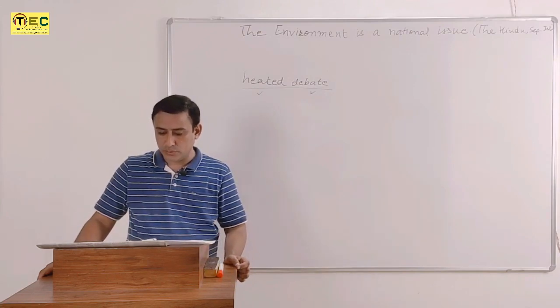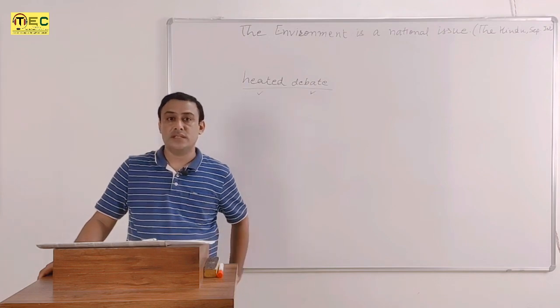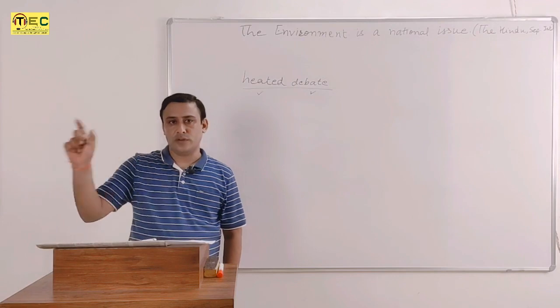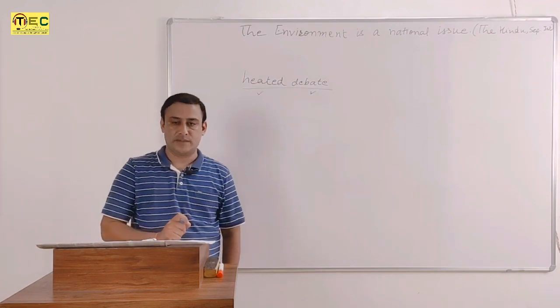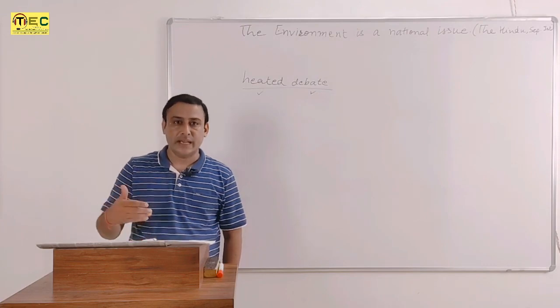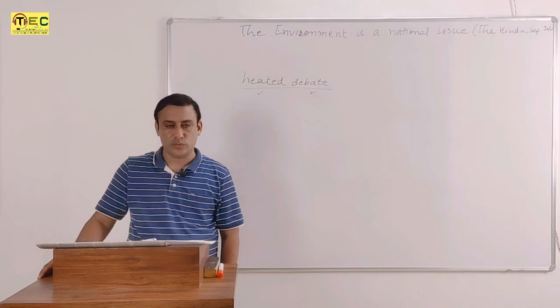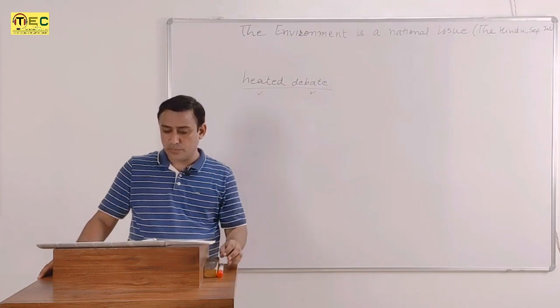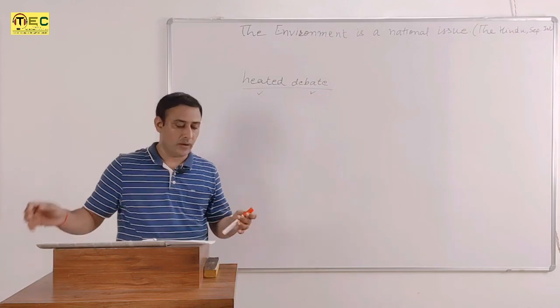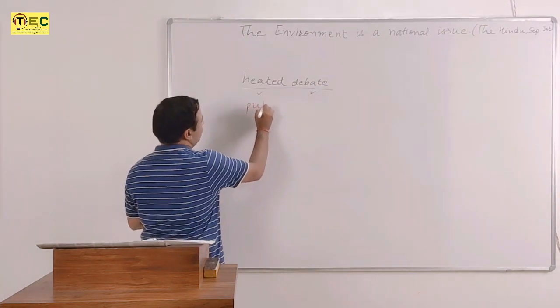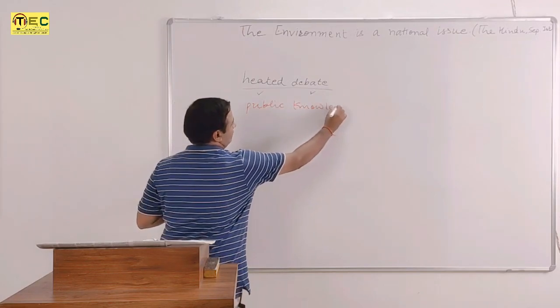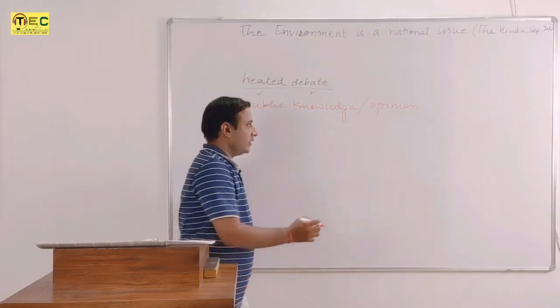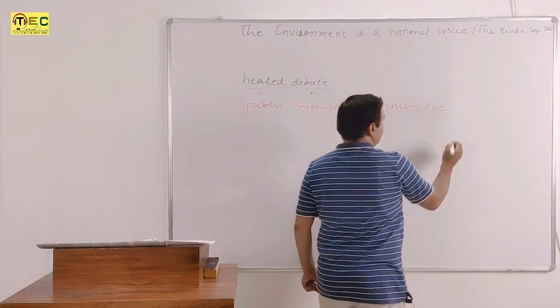I feel that environmental issues should be above political dissonance. Dissonance is a term used to describe disharmony. Dissonance is the opposite of assonance, and these are poetic devices. Some sort of political disagreement or political disharmony is being conveyed through the use of the word political dissonance. And to this end, attempt to highlight critical facts which need to be flagged for public knowledge. Public knowledge and public opinion. There is also a word public eye. Everything is in public eye.